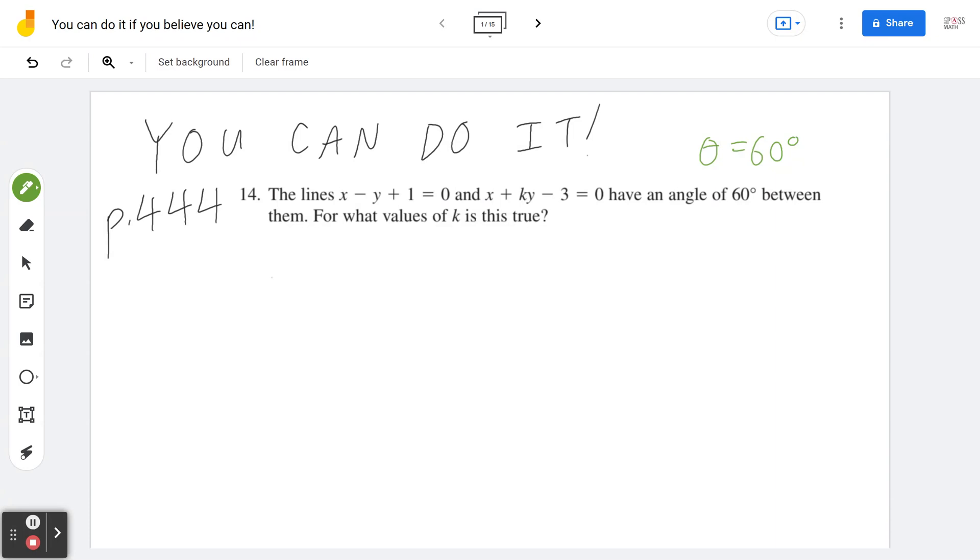Step one, you can draw a diagram. There are two lines, and of course you can draw them on a Cartesian plane if you want. Basically, if you think about this, there's an angle theta that's going to be 60 degrees. This could be, for example, x minus y plus 1 equal to 0, and this second line is going to be x plus ky minus 3 equals 0.